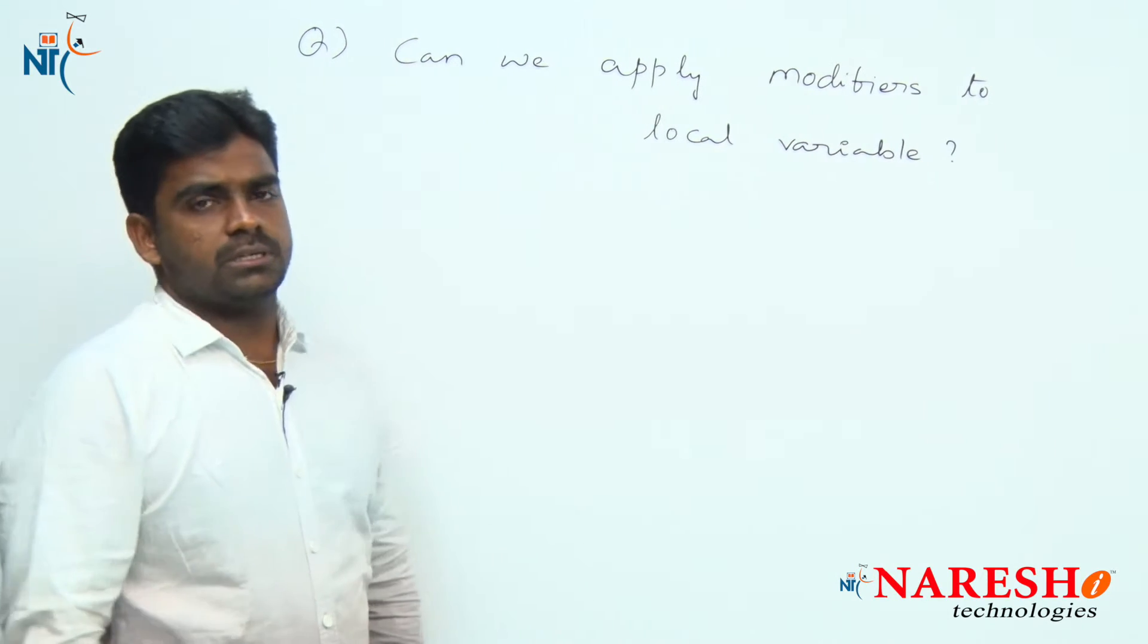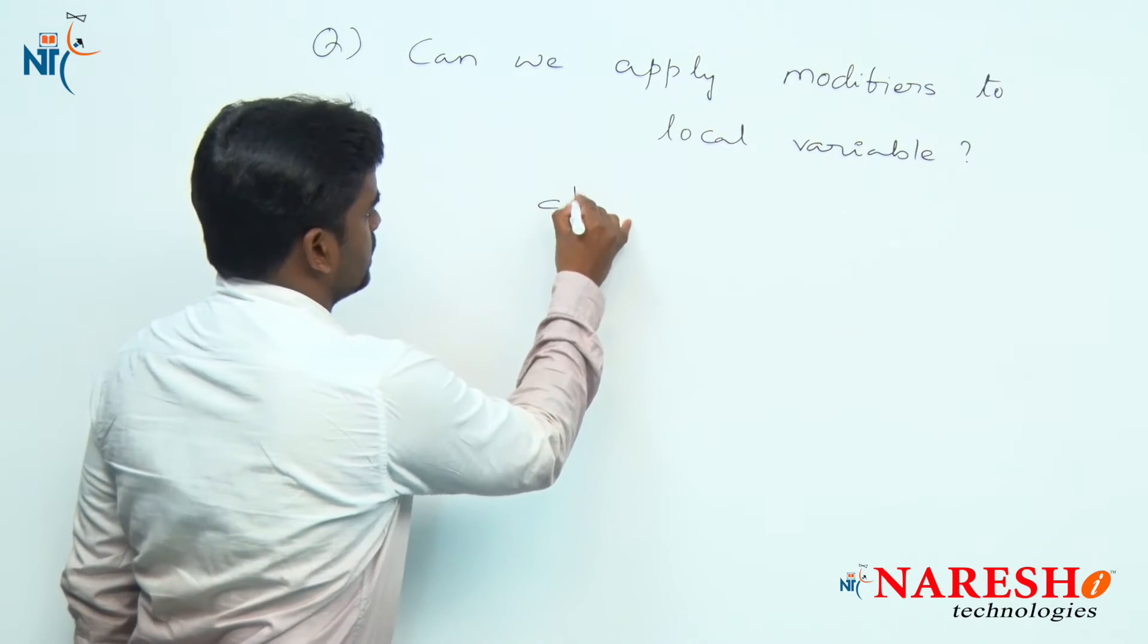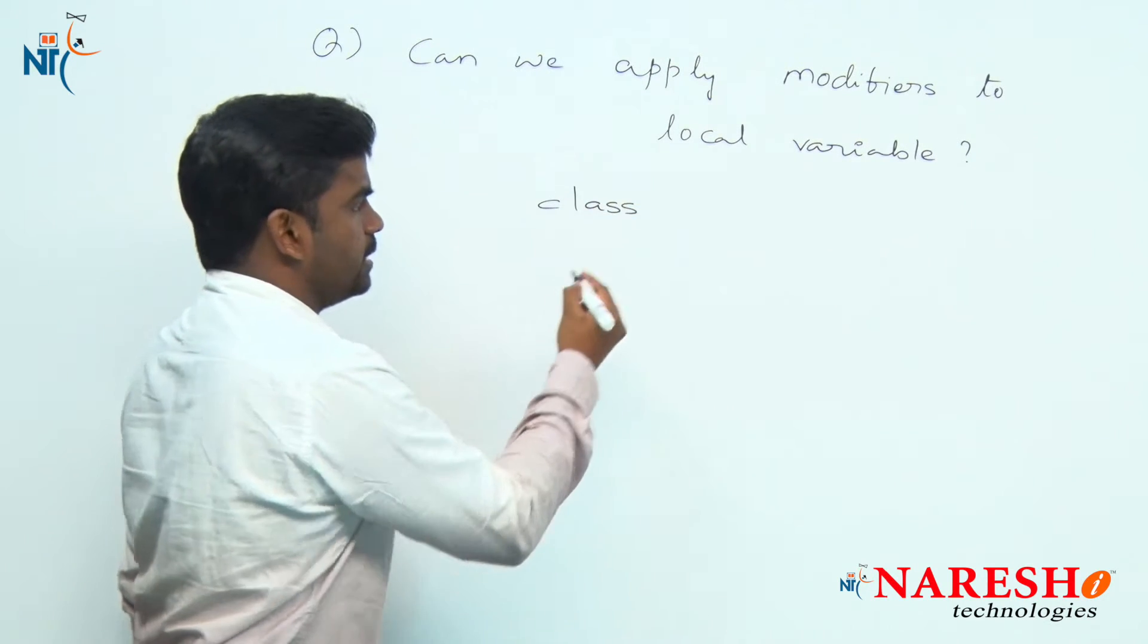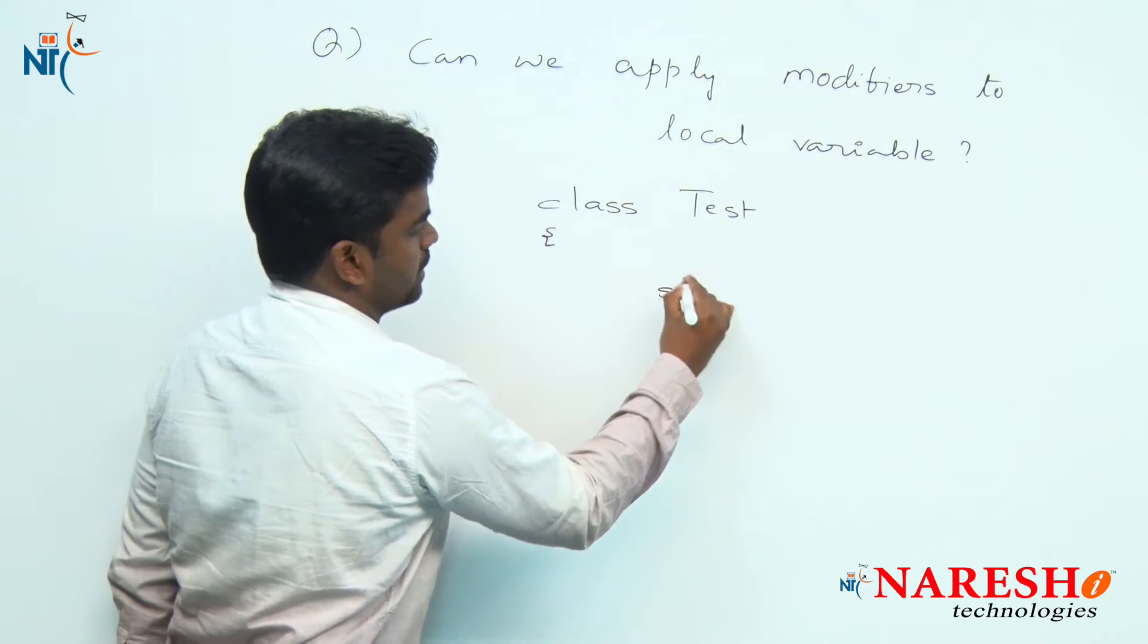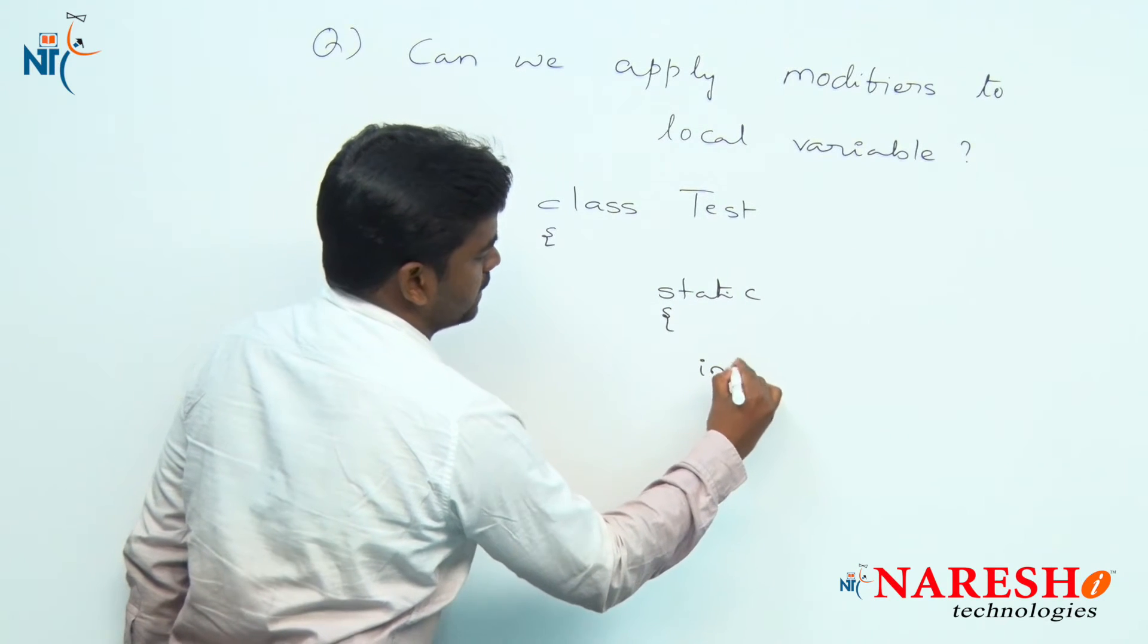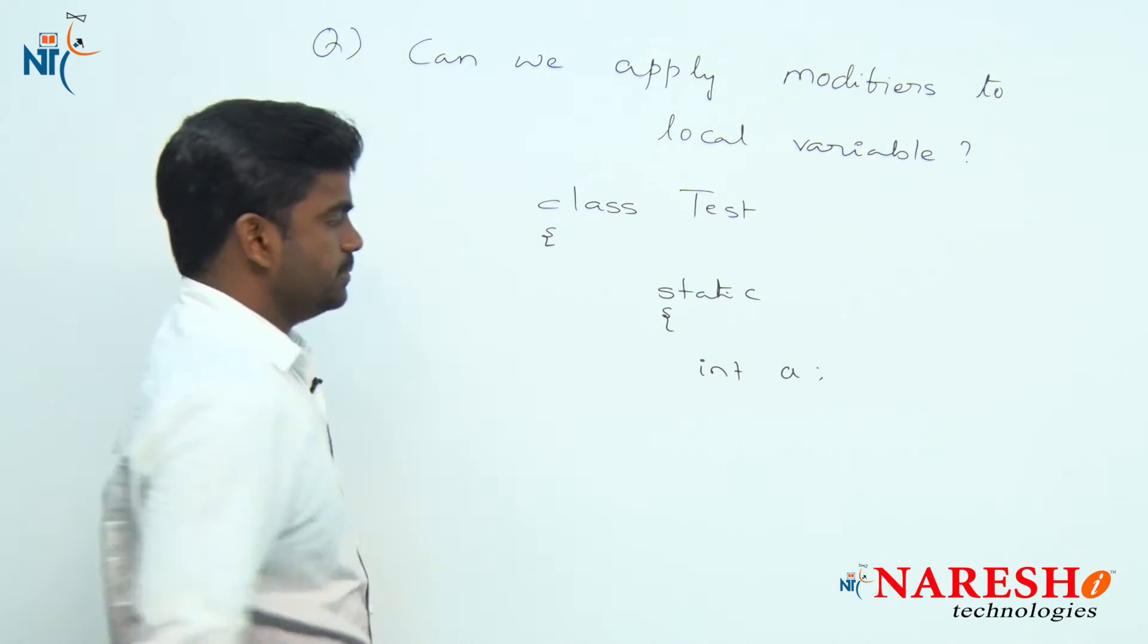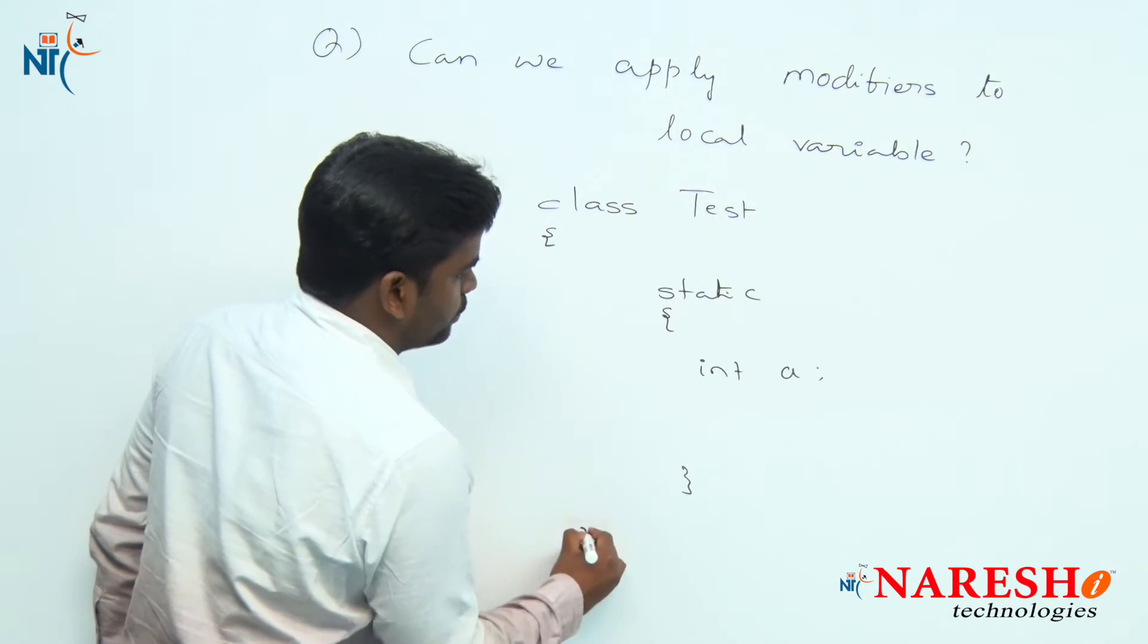So, a few examples we will see. First of all, we should know what is a local variable. Inside a method or inside a block, if you declare any variable, it is called a local variable. And we know the limitations of a local variable.